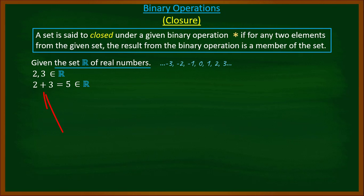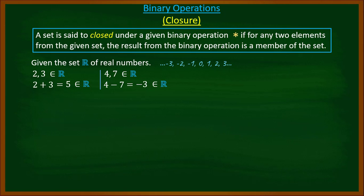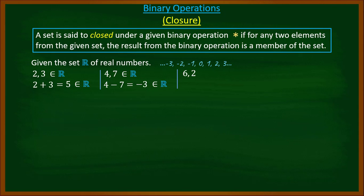Hence we say that the set of real numbers is closed under addition. Also, if we pick four and seven from the set of real numbers and perform the operation subtraction, four minus seven gives us negative three, which is also a real number. So the set of real numbers is closed under subtraction.